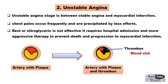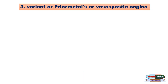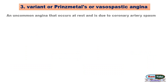Unstable angina can occur with stress, exercise, or even at rest. The third type is variant angina, also known as Prinzmetal's or vasospastic angina — an uncommon angina that occurs at rest and is due to coronary artery spasm.